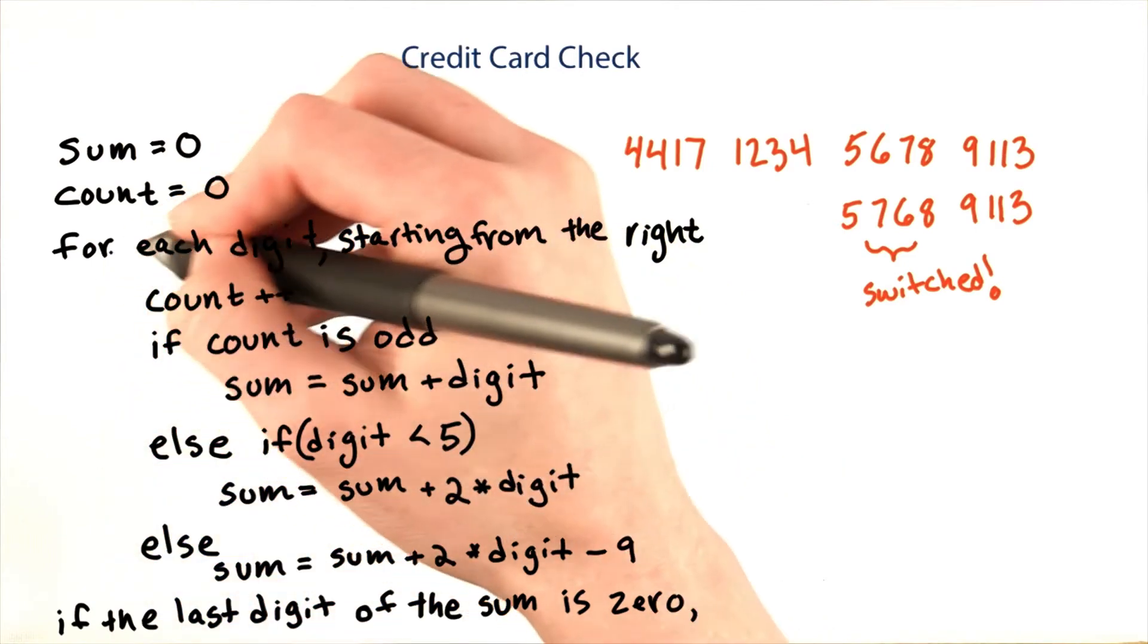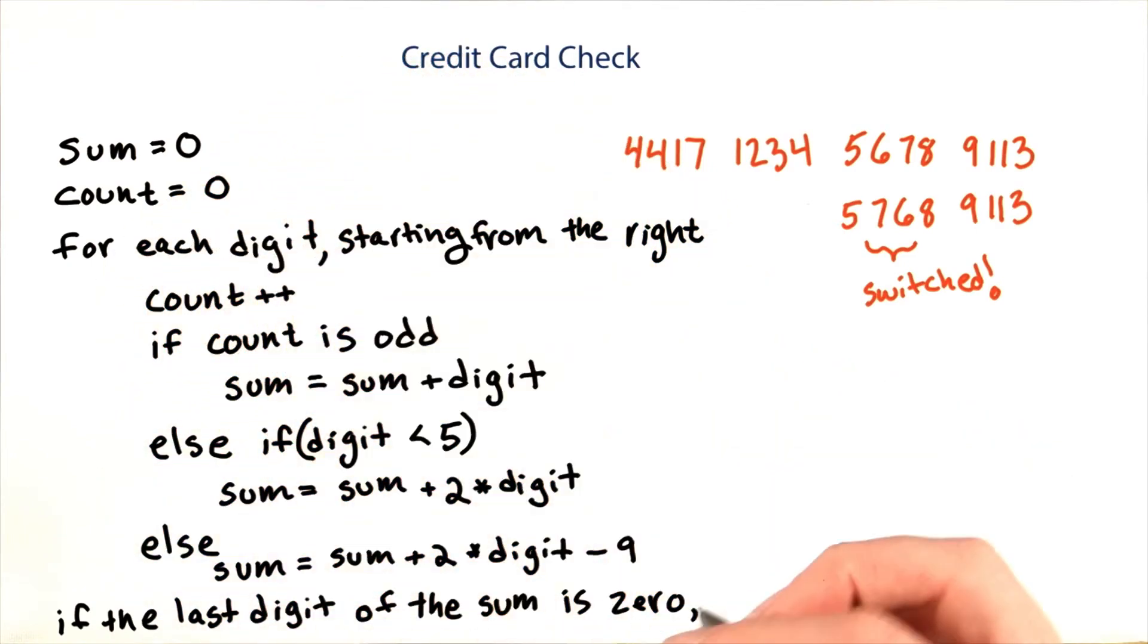And then after all of that, if the last digit of the sum is 0, the card number is valid.